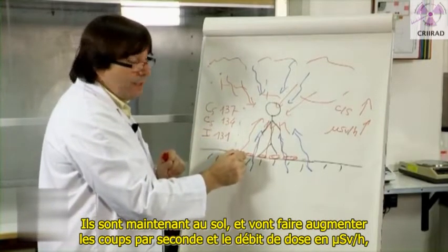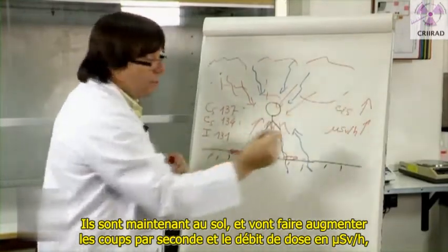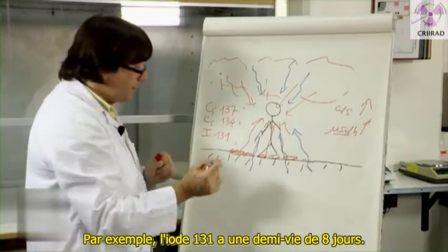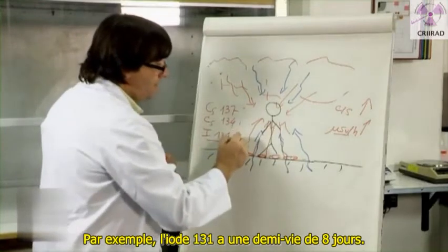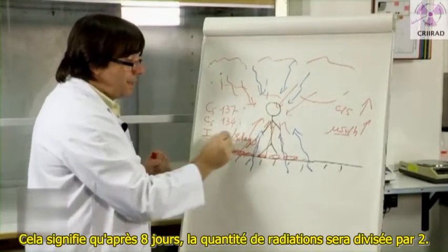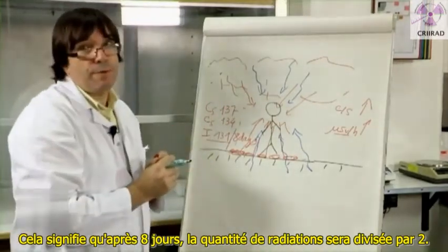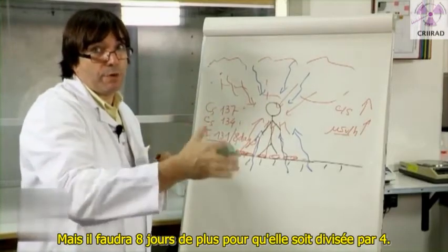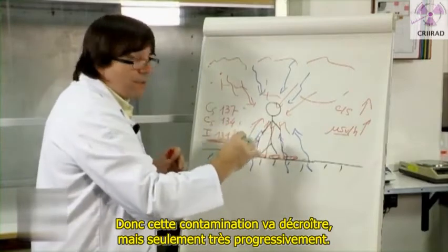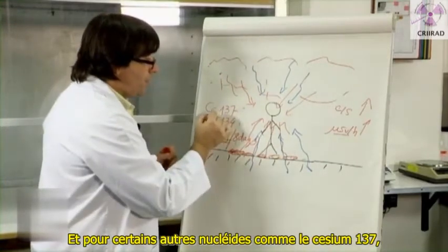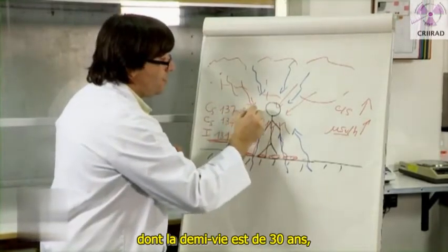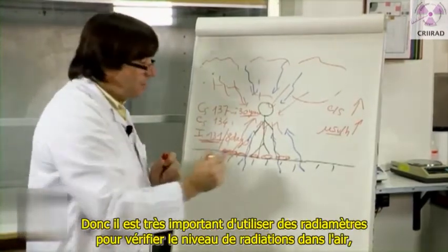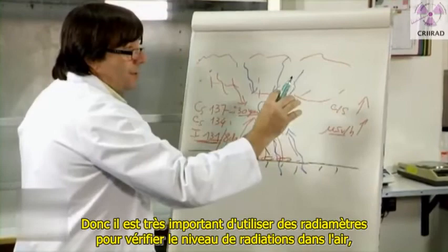They are now on the soil and they will increase the counts per second, the dose rate in microsieverts. For example, iodine-131 has a half-life of 8 days, meaning that after eight days the amount of radiation will be divided by two, and it will take eight more days to be divided by four. So this contamination will decrease, but only very progressively. For some other nuclides like caesium-137, whose half-life is 30 years, the contamination will last for decades.